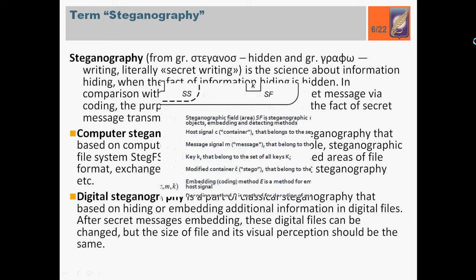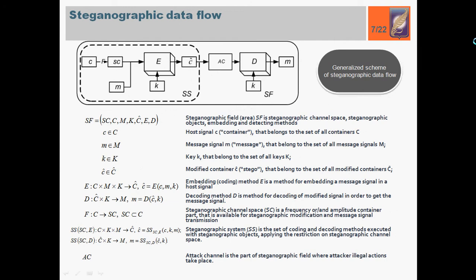General scheme of steganography data flow is presented on this slide. Steganography field area is steganography channel space, steganography objects, embedding and detecting methods. Steganography objects are: Host signal that belongs to the set of all containers C, Message signal M that belongs to the set of all embedded message signals M, Key that belongs to a set of all keys, and modified container C prime that belongs to a set of all modified containers.